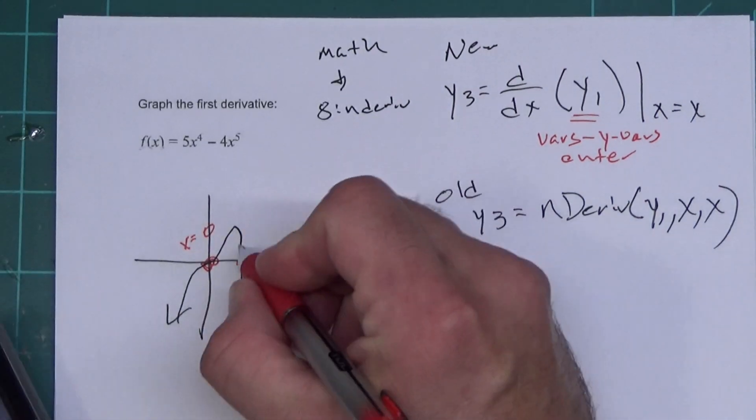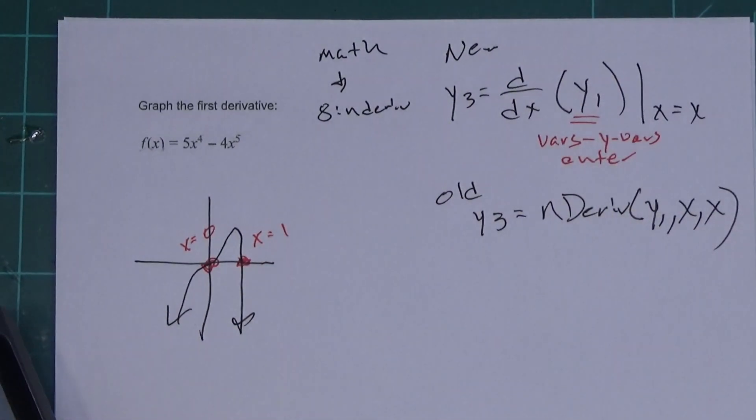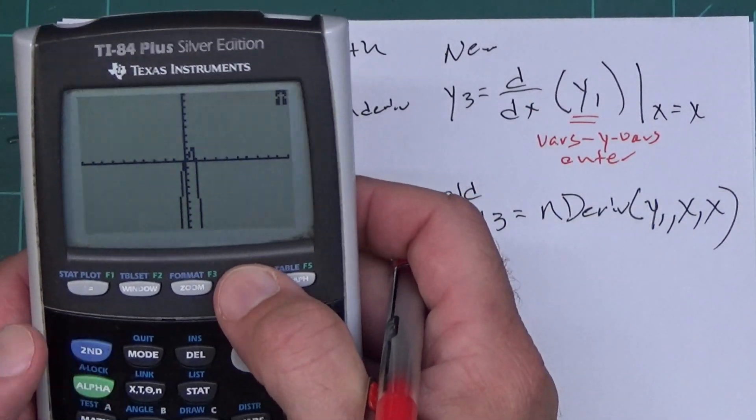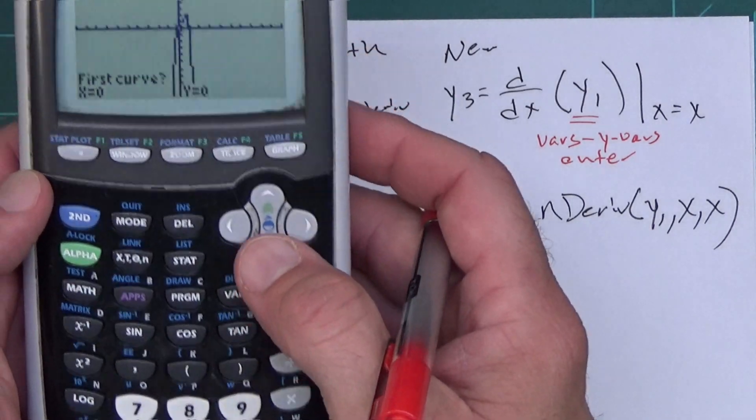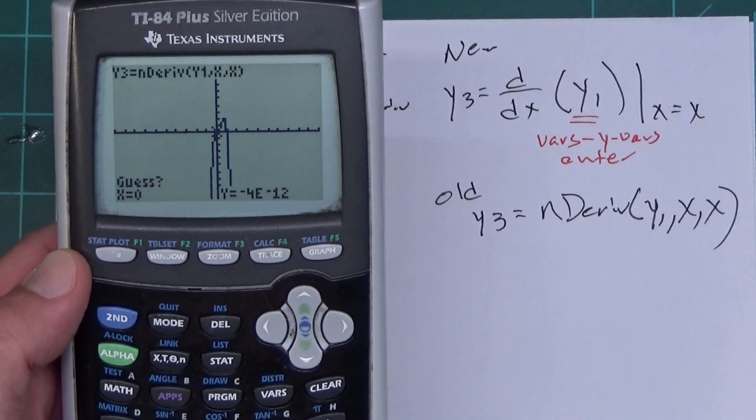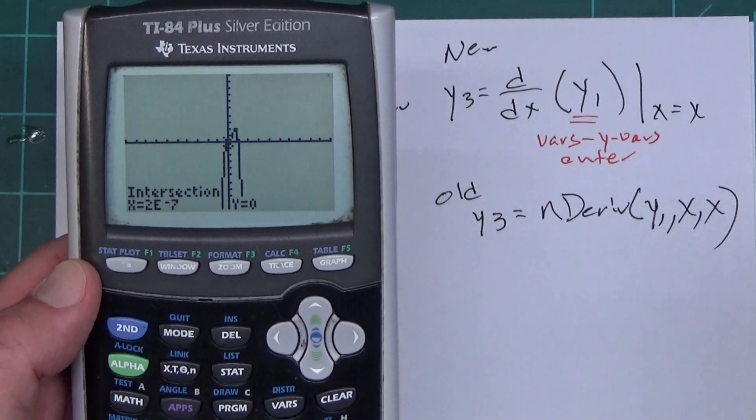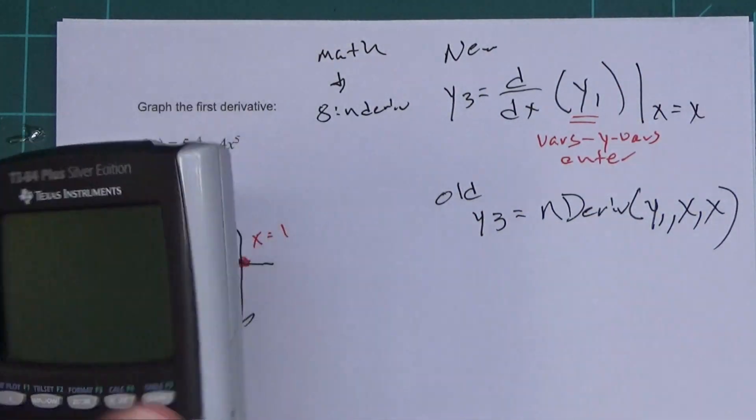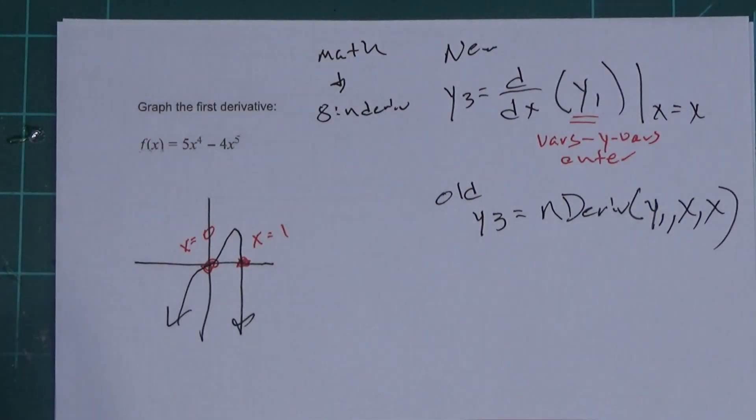And it tells me X equals zero. So this one's at X equals zero. I hit second trace, go down to five, go over to the other intersection point, press enter three times. It tells me one. So I have two critical values, zero and one. It's the same thing on this one. So I wasn't doing it, but second trace five. And then you press enter three times. It's literally the exact same thing. Tells you the same answer. I almost prefer this one because it's easier to read and I'm slightly blind because I had a bad eye doctor.